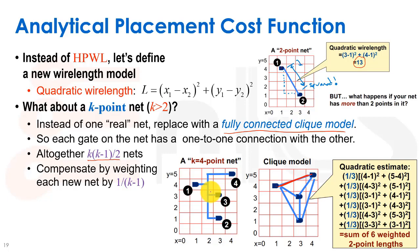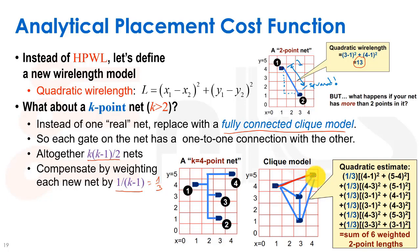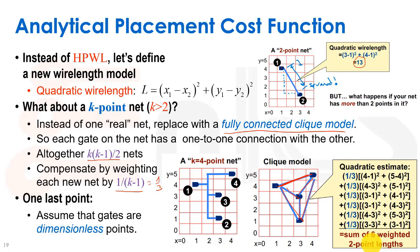So what we want to do is weight each net — make each weight be worth less than it was before. We'll take a weighting factor of 1/(k-1). In our example, k is 4 because there are four pins, so 1/(k-1) is one-third. We multiply each point-to-point quadratic length by one-third and sum all six weighted two-point lengths. This weighting factor reduces the effect of each additional fan-out on the total wire length.